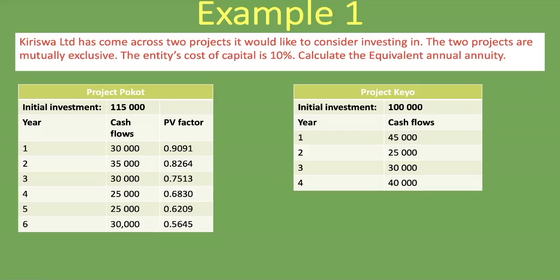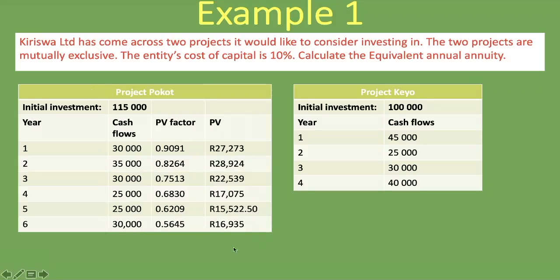Now that we have the present value factor, we multiply the cash flow for each specific year by its present value factor. For year one: 30,000 Rand times 0.9091, giving us the present value for that cash flow. We continue all the way to year six. Year one gives 27,273 Rand, through to year six at 16,935 Rand. Small differences in answers are due to rounding.